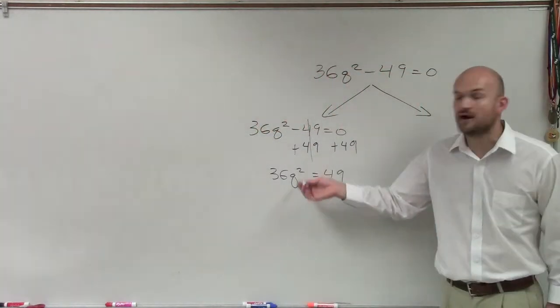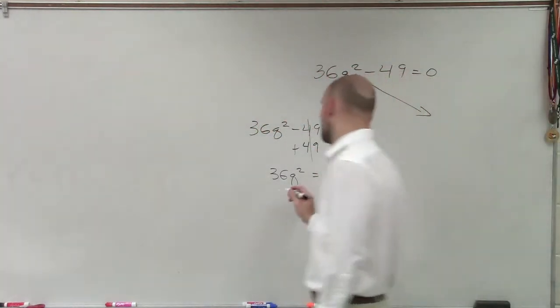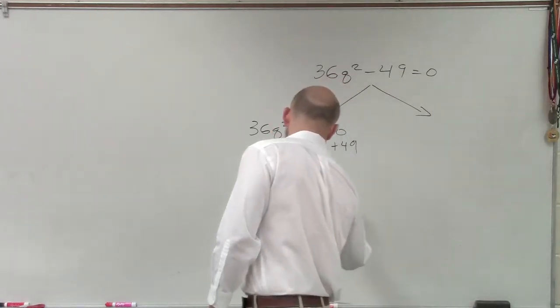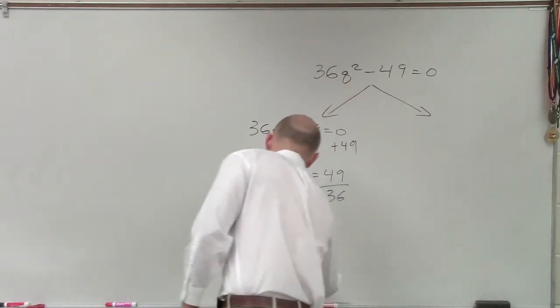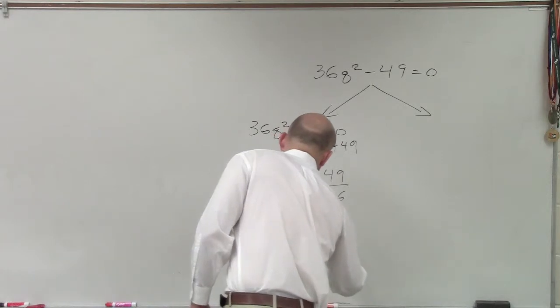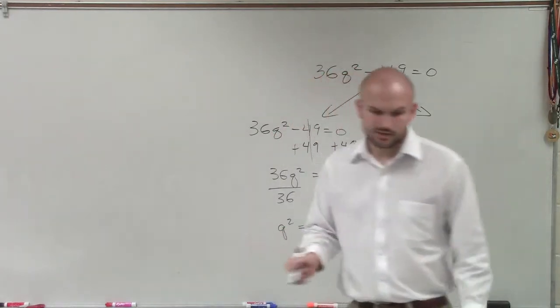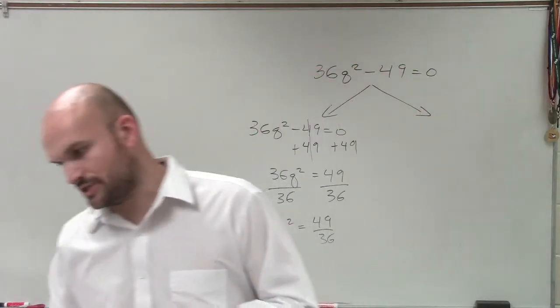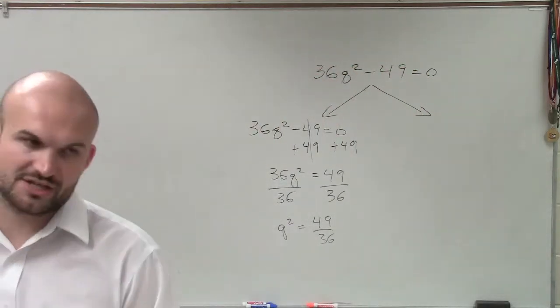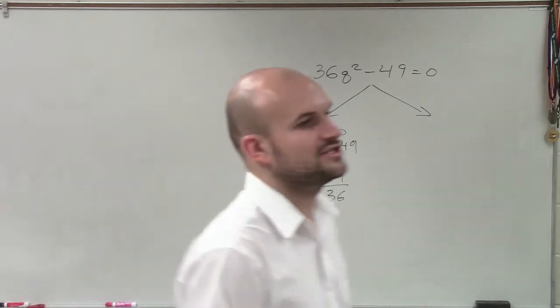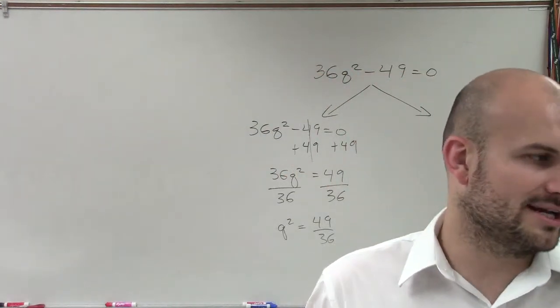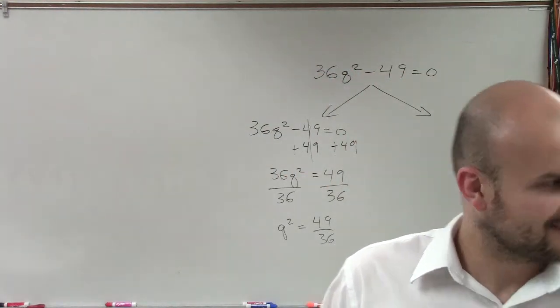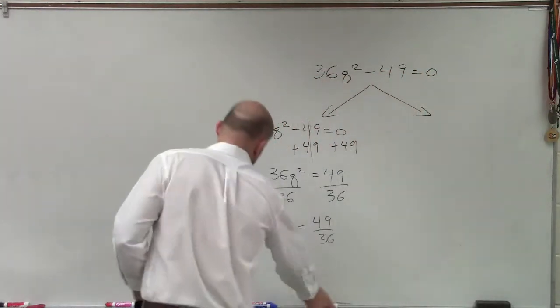Now I look at my variable and I say, alright, it's being multiplied by 36. So now I undo multiplication. So now I have q squared equals 49 over 36. So the inverse operation of addition and subtraction, the inverse operation of multiplication and division, the inverse operation, Eileen, of squaring is going to be? Square root. Square root. So then you just take the square root of both sides.